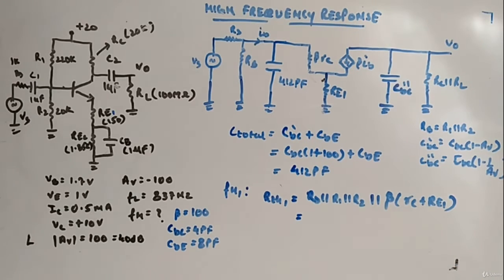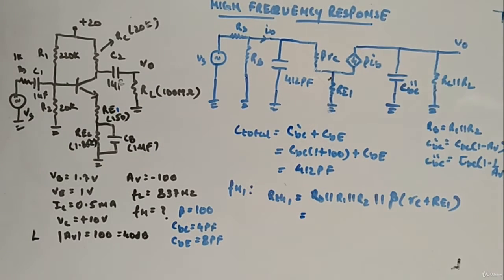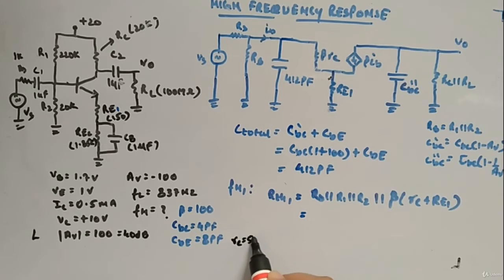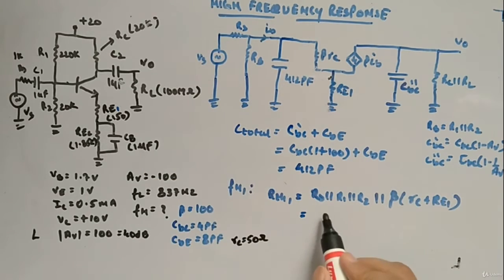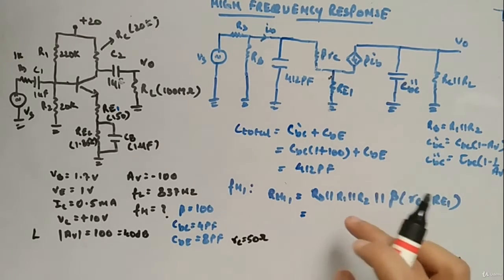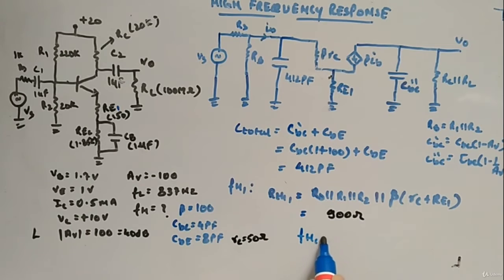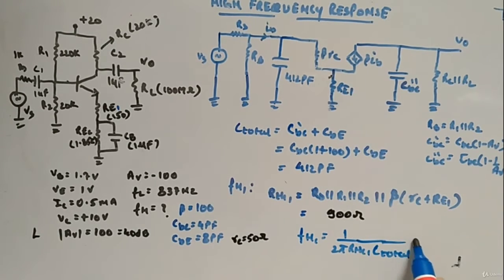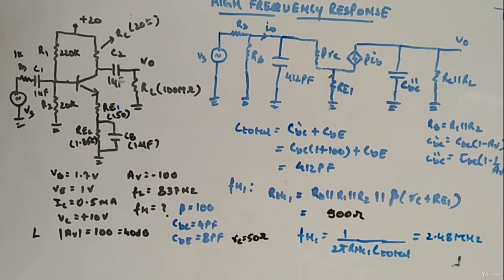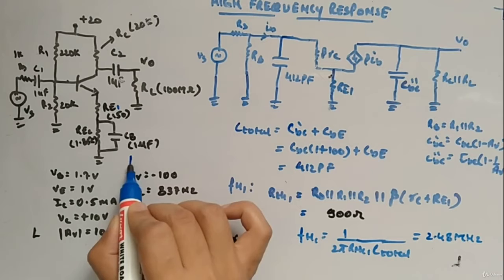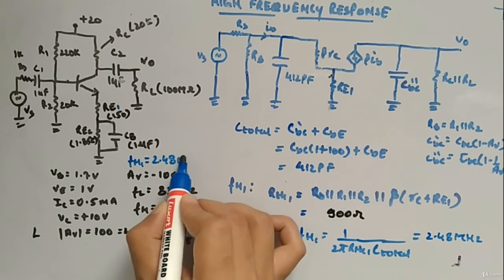β = 100 and small re = 50Ω, so β·re = 5000Ω. With RE1 = 150Ω, β·re + RE1 = 5150Ω. Plugging all values in gives RTH1 = 900Ω. Therefore, fH1 = 1 / (2π × RTH1 × C_total) = 1 / (2π × 900 × 412pF) = 2.48 MHz.